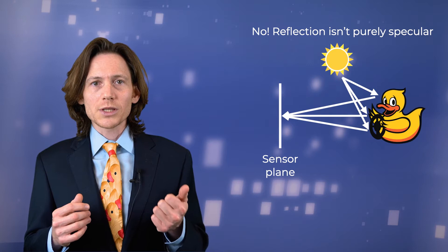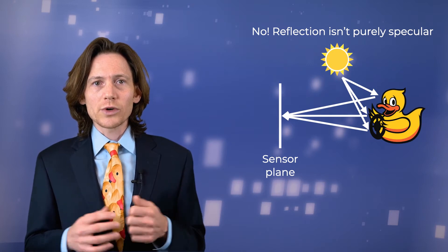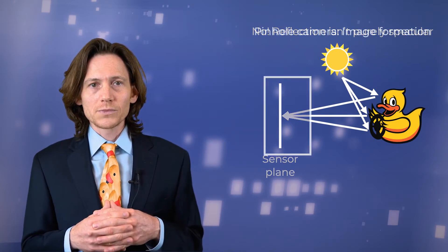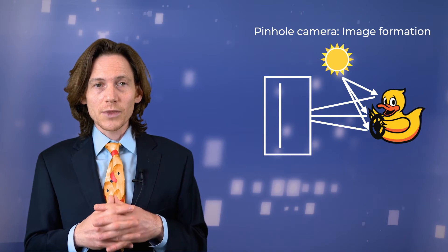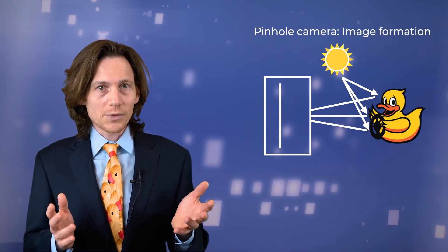If we want an image that accurately captures the content of the scene, we need to control which rays of light impact the sensor. In the extreme case, we can encase the sensor in a light-proof box that blocks all specular and diffuse light from reaching the sensor.